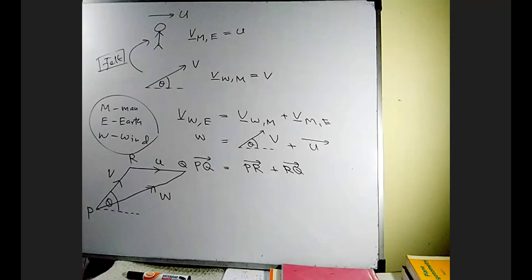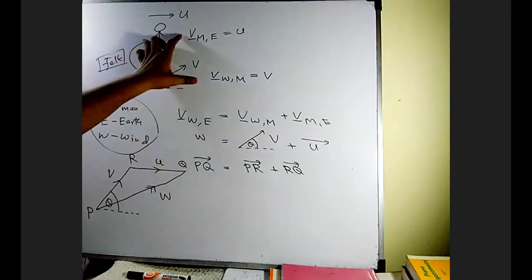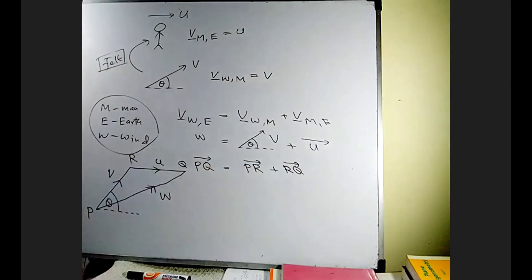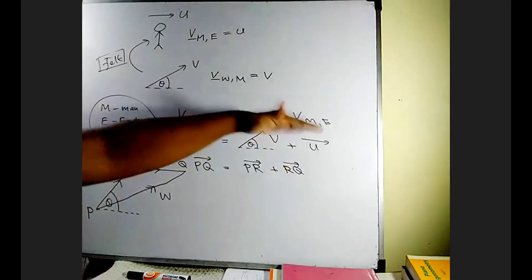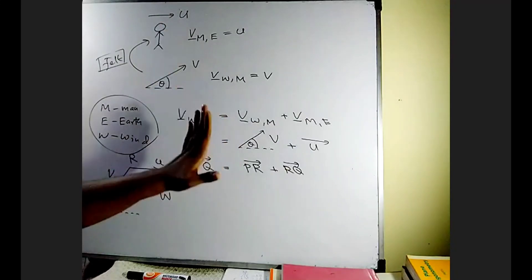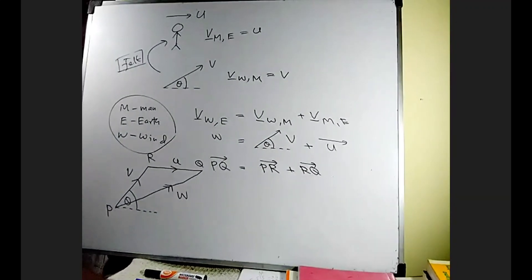That is the first part of relative velocity — when two velocities are given and we are asked to find the third, we write it in terms of those two vectors. When both magnitude and direction are known for each velocity, we can directly draw the velocity triangle like this.